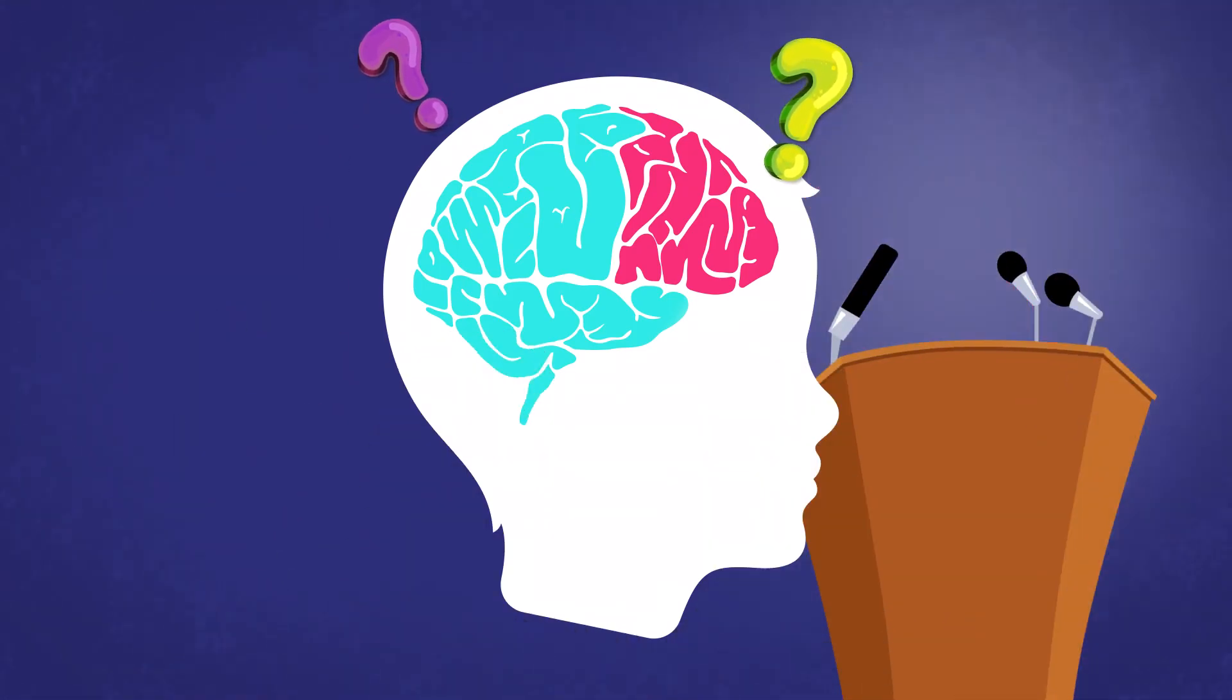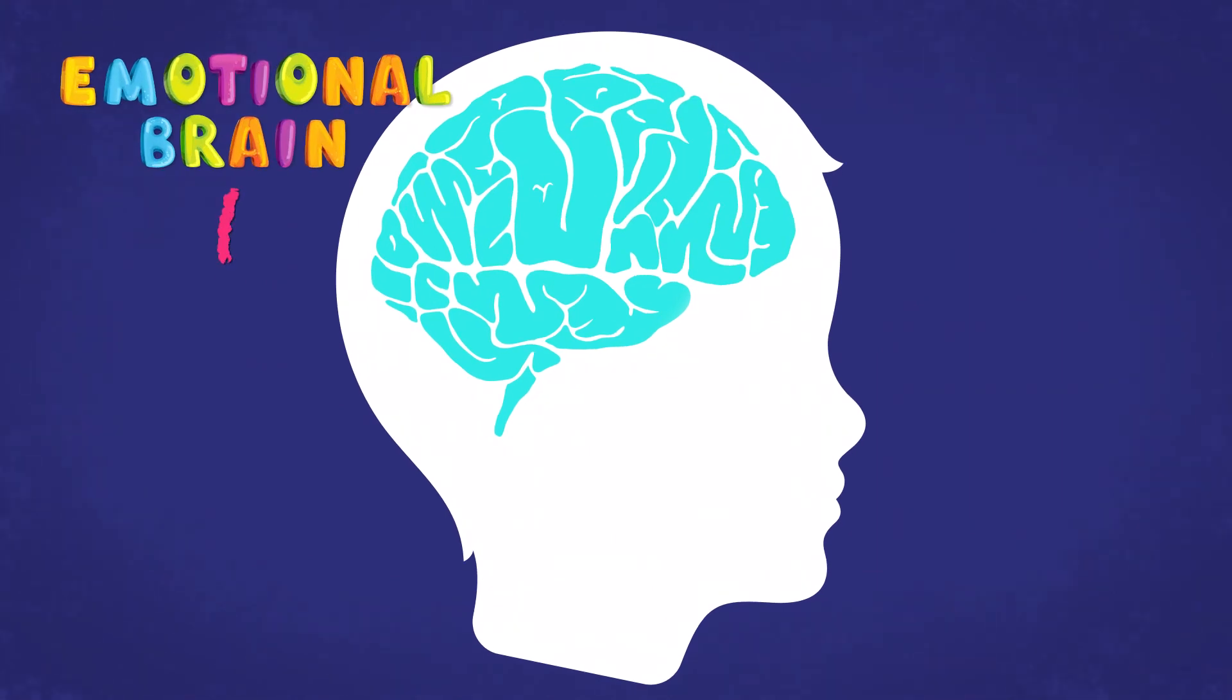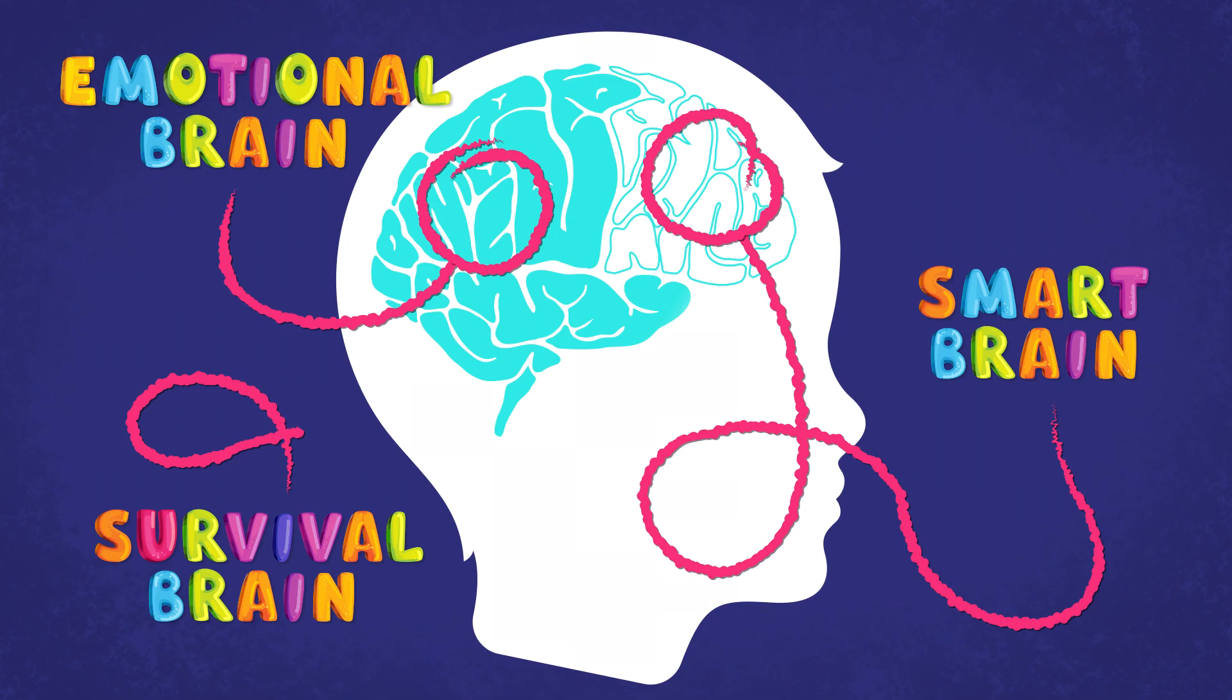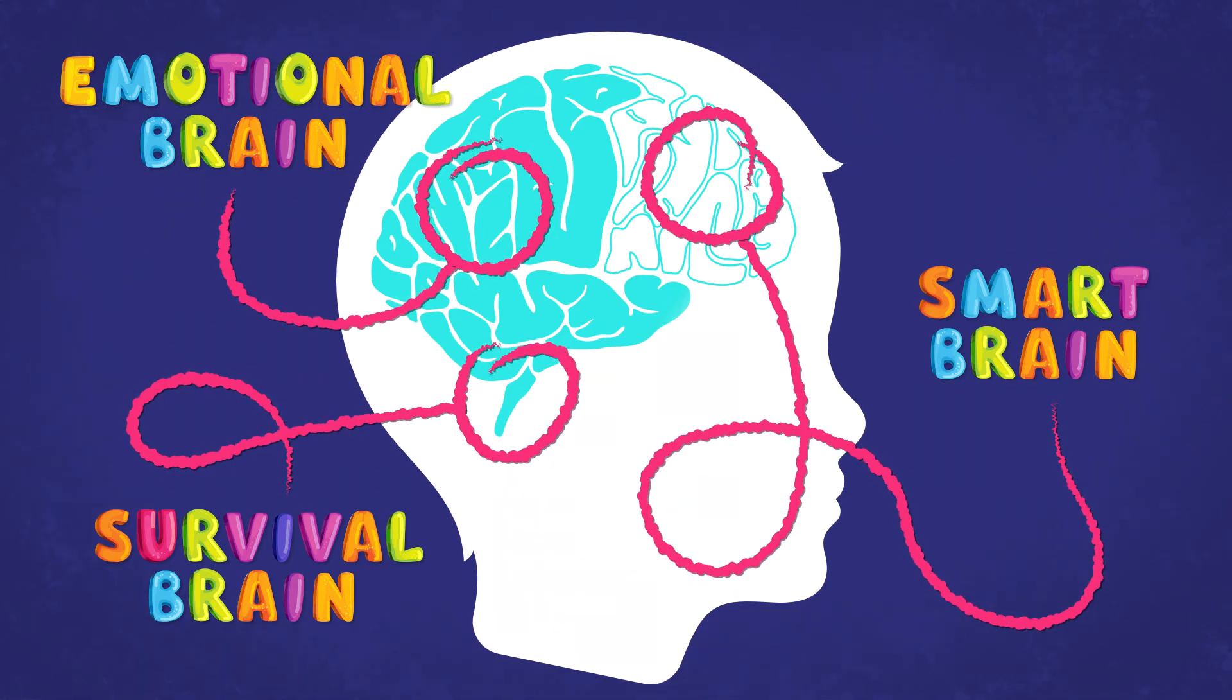A big part of being able to manage our emotions is learning how to notice when our smart brain is about to switch off and finding out what we can do to keep the smart brain switched on.